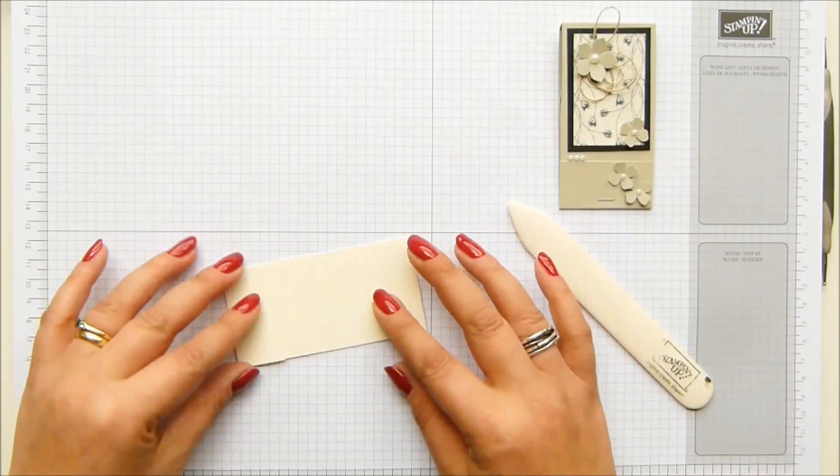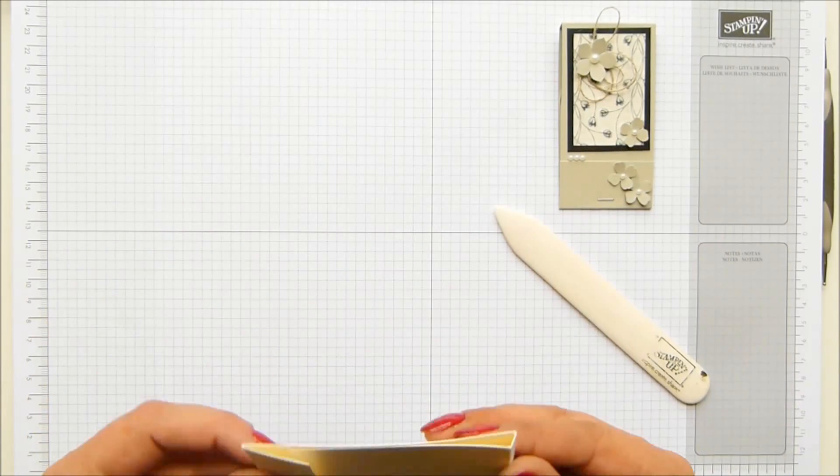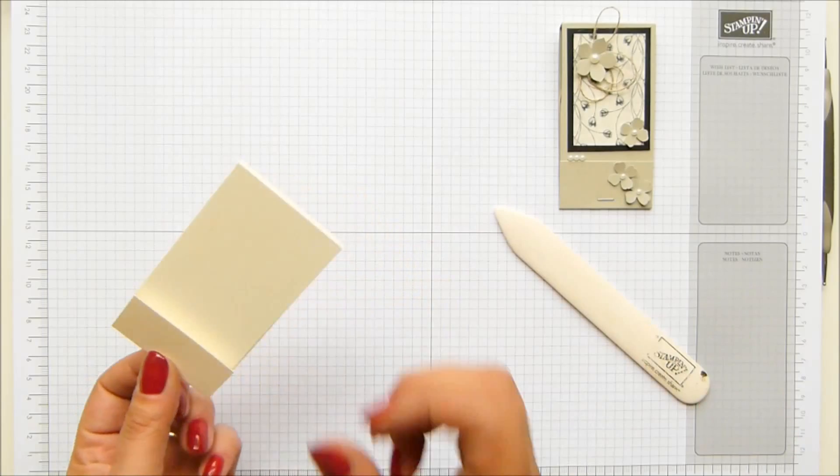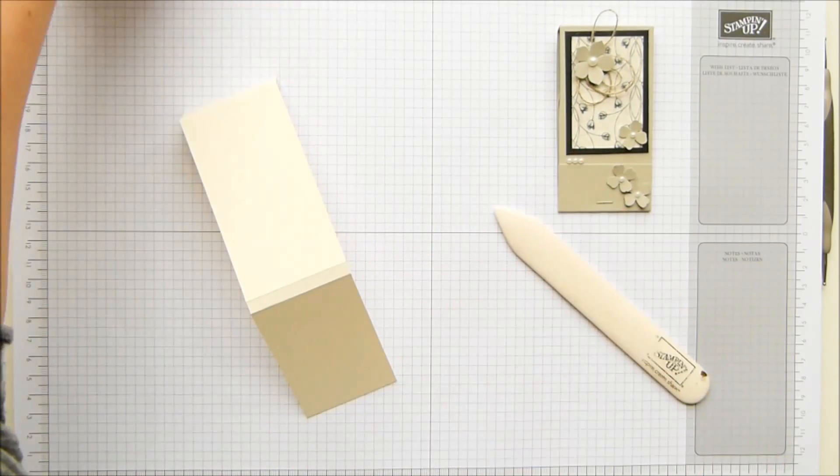So fold the score lines and burnish them. And then before you staple it, which we're going to do in a minute to stop it from all falling open, we want to put the designer series paper on in the background, which is here.